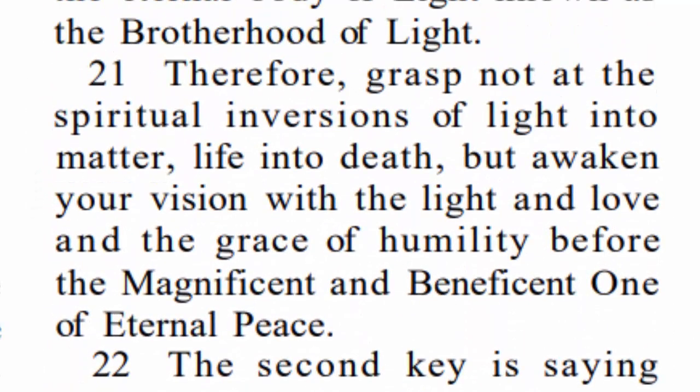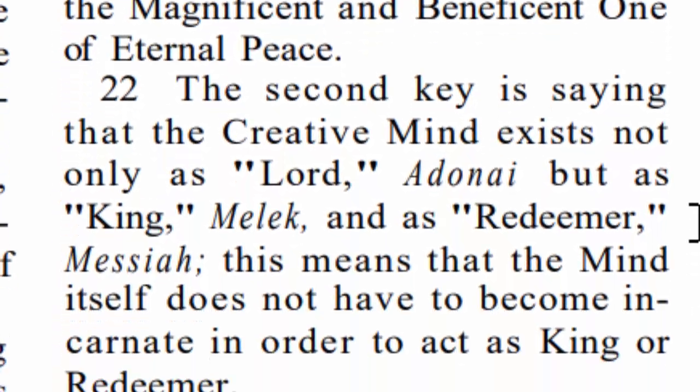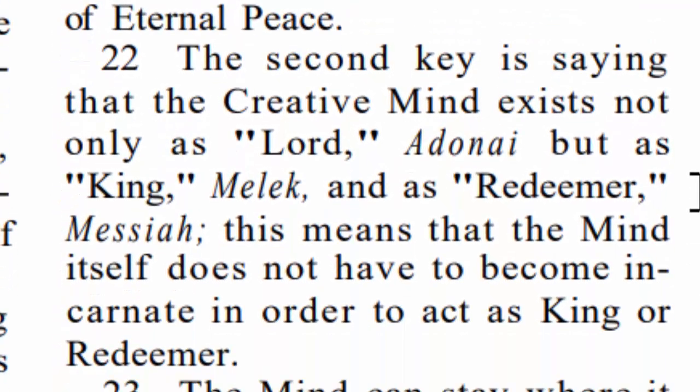Verse 21 is rounding out that first key. Then in verse 22 you see the second key starting to be talked about. It says the second key is saying that the creative mind exists not only as Lord Adonai, but as King Melech and as Redeemer Messiah. This means that the mind itself does not have to become incarnate in order to act as King or Redeemer.